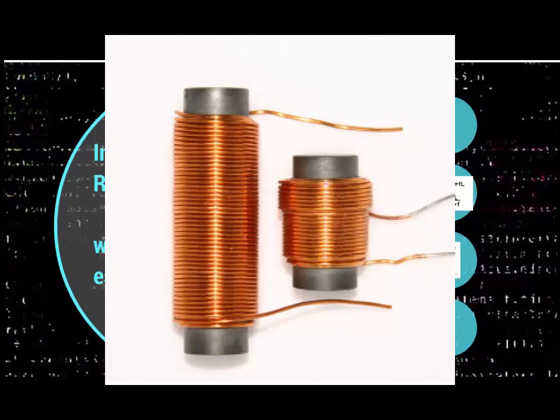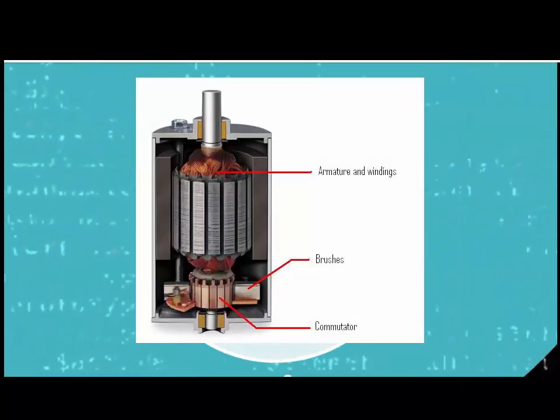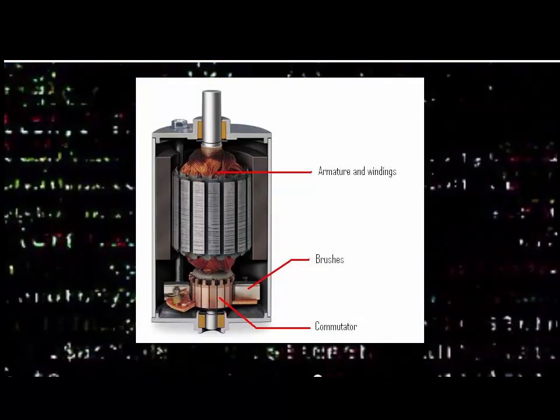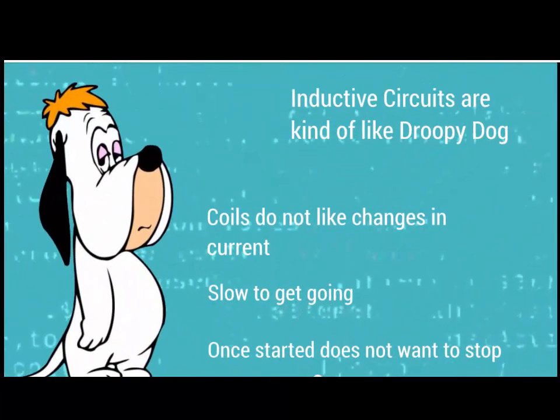I think about this like my good friend Droopy Dog. Droopy Dog does not like change. Inductive circuits with coils don't like when you start a circuit, when you try to increase current — they're slow to get going. And once current is flowing through the circuit, they don't want to stop. This is exactly Droopy Dog.